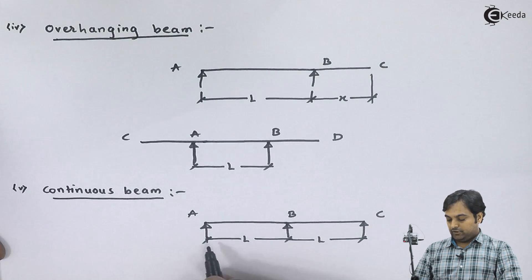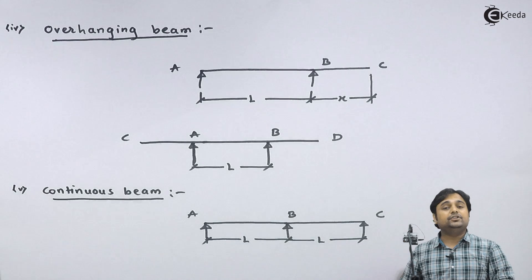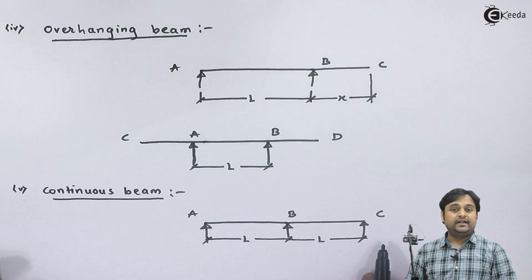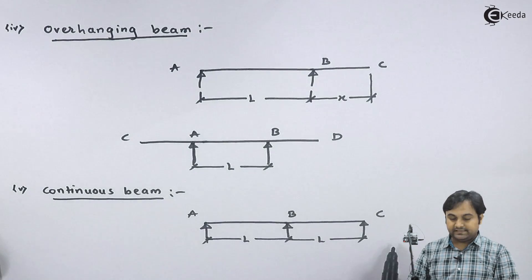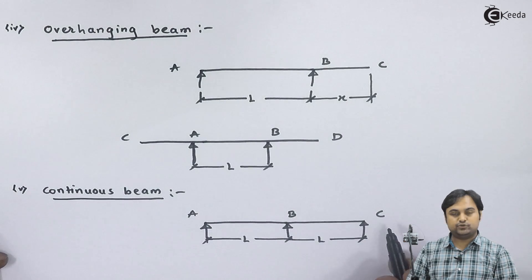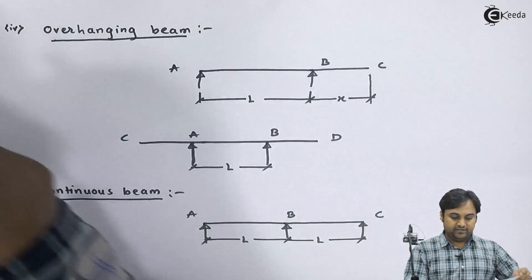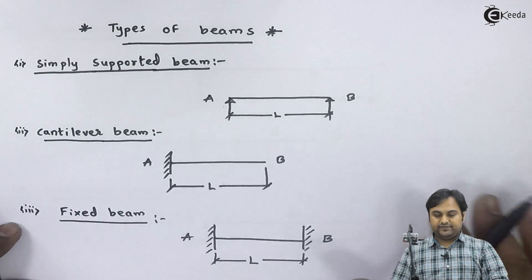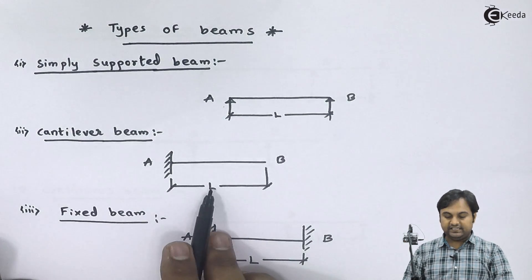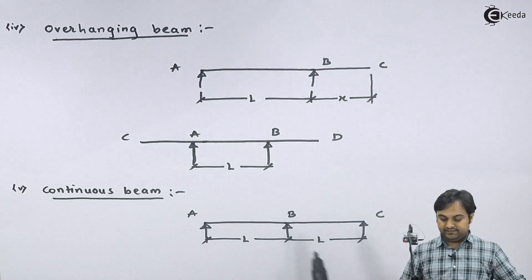Next we have the continuous beam. A beam which has more than two supports is called a continuous beam. A continuous beam is also like a simply supported beam — it is supported at the ends, and apart from the supports at the ends, it should have some support in between, anywhere between A and C. So such a beam is a continuous beam. We have now seen different types of beams: simply supported beam, cantilever beam, fixed beam, overhanging beam, and continuous beam.